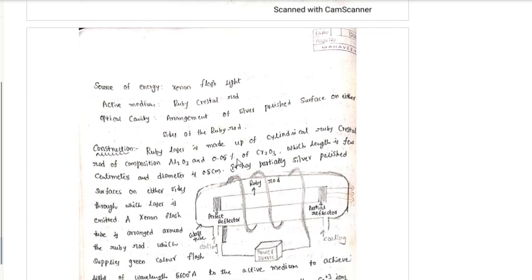These are the important parts of this concept. There is the source of energy, the xenon flashlight, the active medium which is the ruby crystal rod, the optical cavity, and the arrangement of silver polished surfaces on either side of the ruby rod.